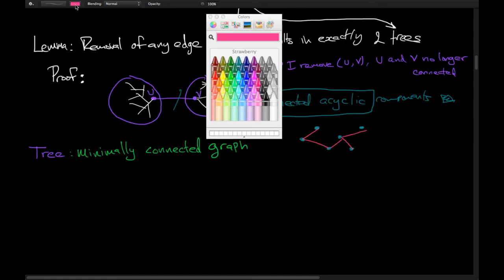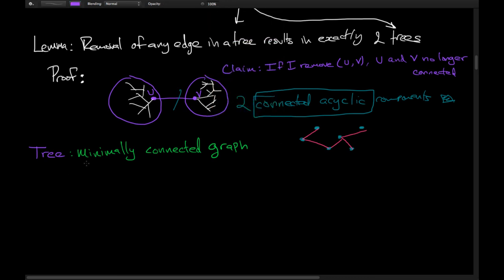A tree is an example of a minimally connected graph — one that uses the fewest edges to still connect all nodes. There's really only one path between any two nodes. However, if you remove just one edge, you completely lose the connection between two portions of the tree. That's not ideal, so let's think of something more robust.